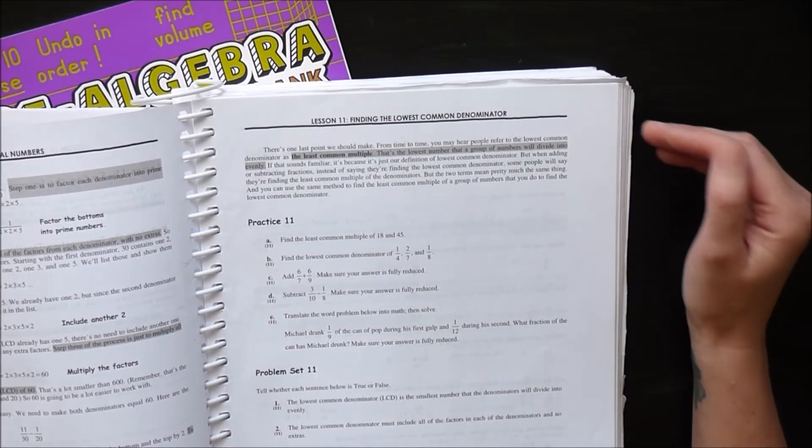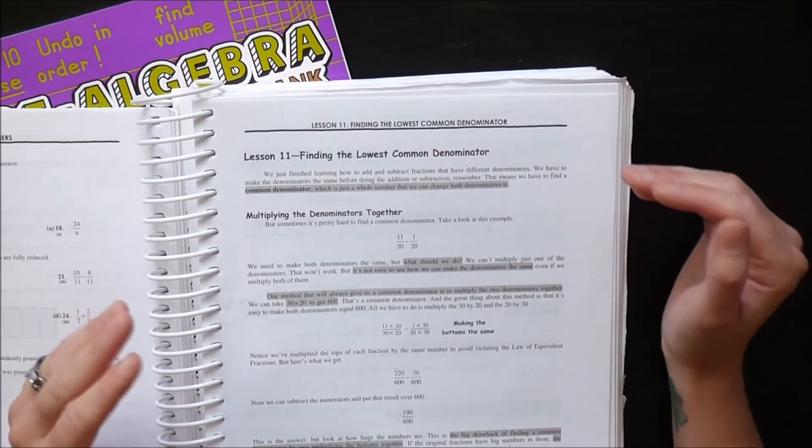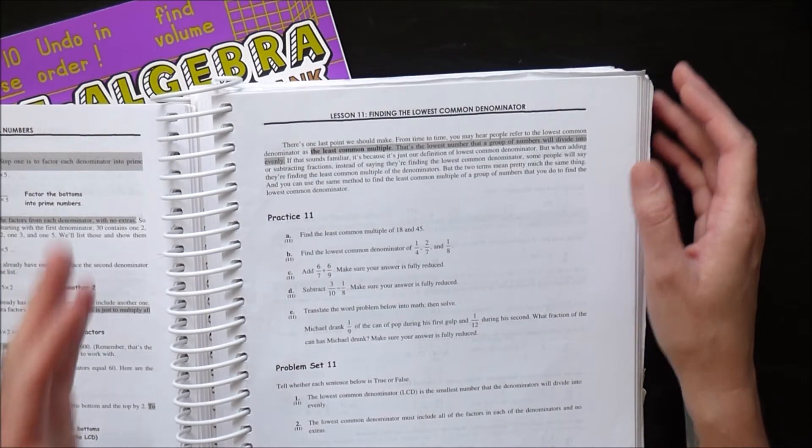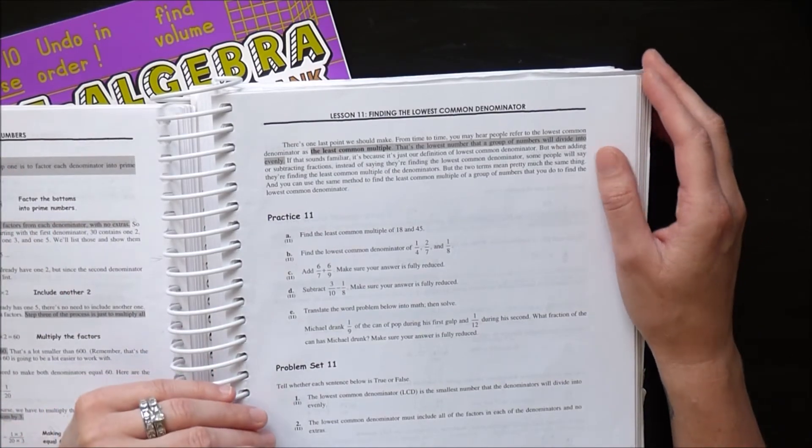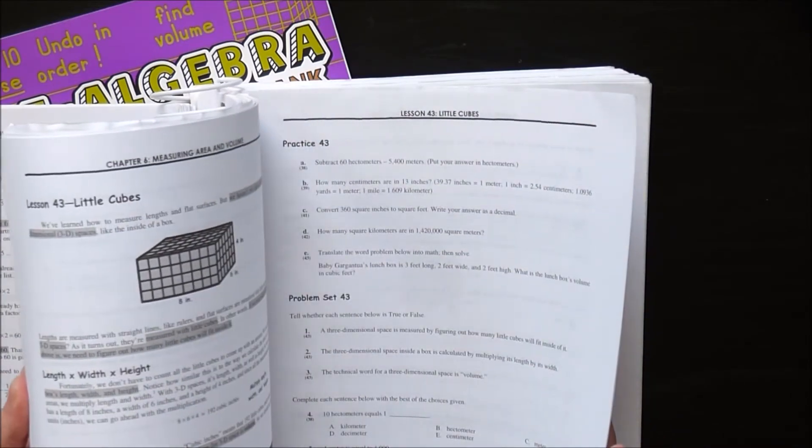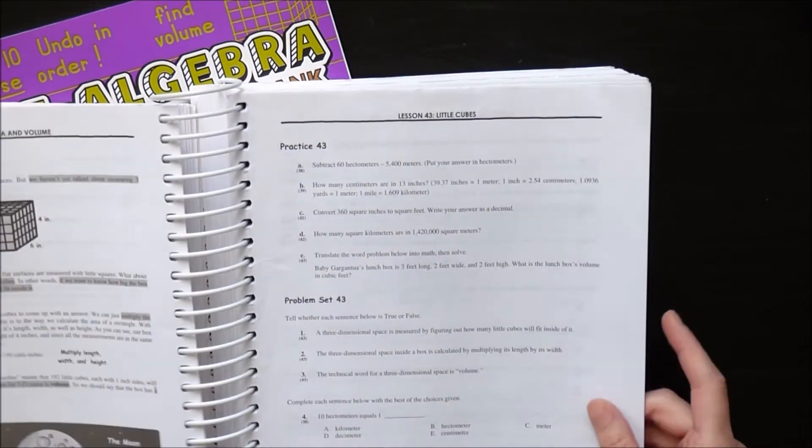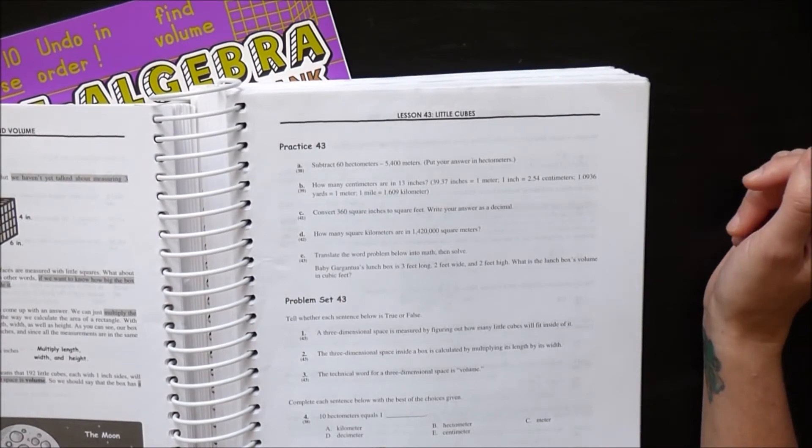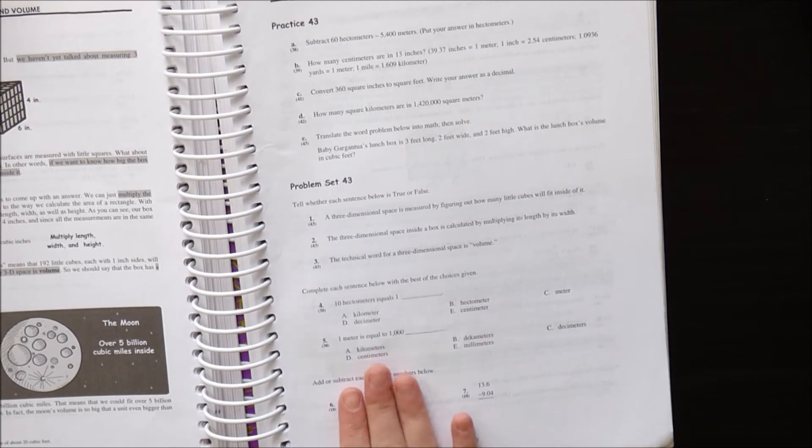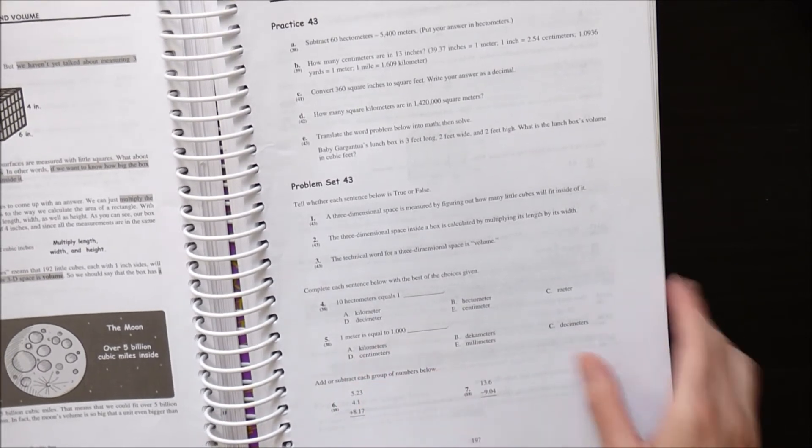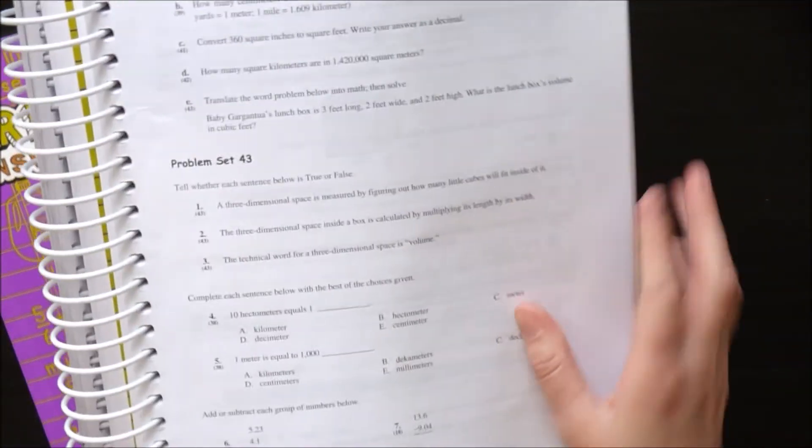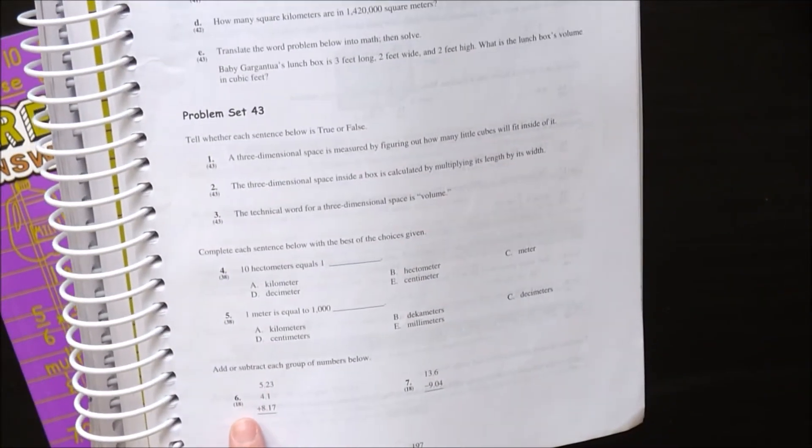Another great thing about Teaching Textbooks is, let's say you get onto a newer lesson. We'll say practice lesson 43. Let's just say that your student has forgotten how to add or subtract decimals. What you'll notice right next to the problem number, right under it, you're gonna see a number in parentheses.